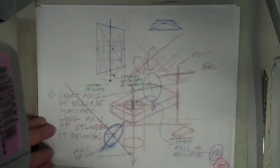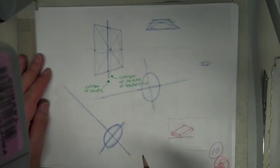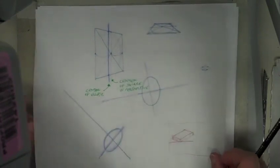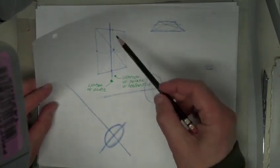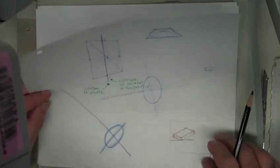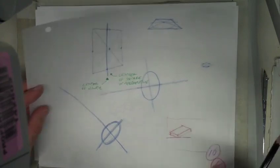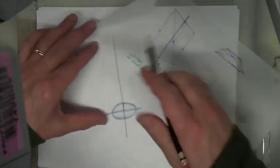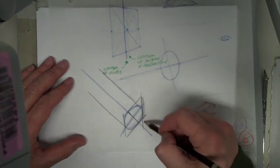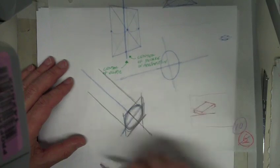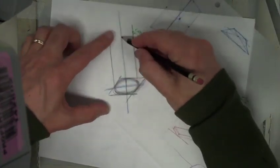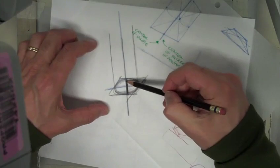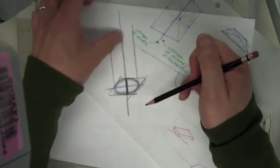There's still the old tutorial about ellipses in perspective — I recommend you look at that. An ellipse is not really a circle in perspective, but we treat it as one for our purposes. The main thing to remember is that for a cylindrical object, the shortest axis of the ellipse matches the longer axis of the cylinder it belongs to.